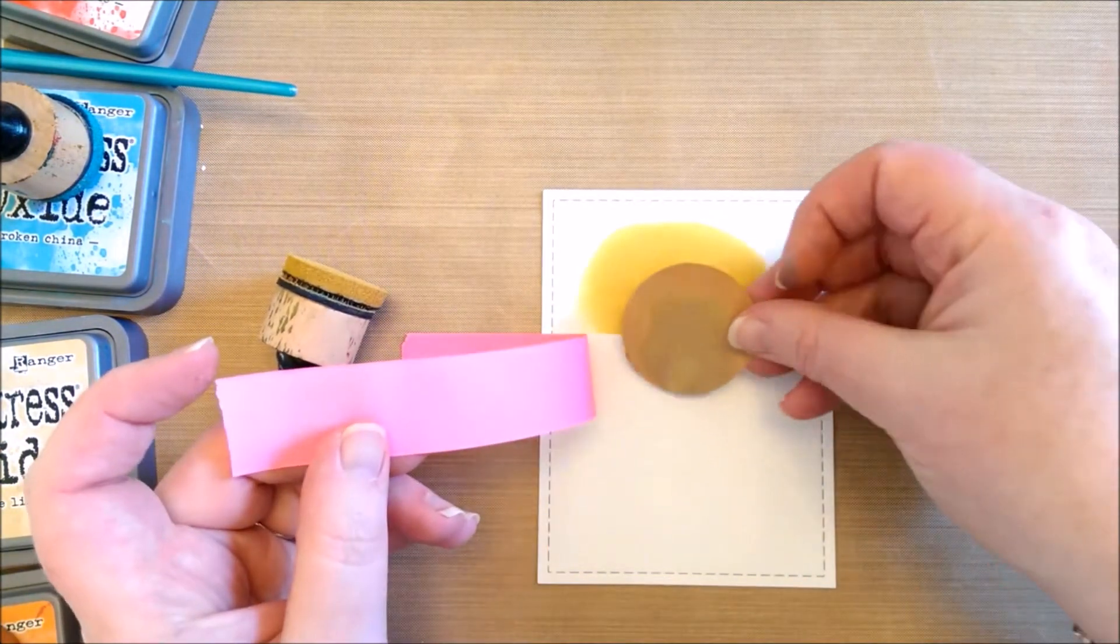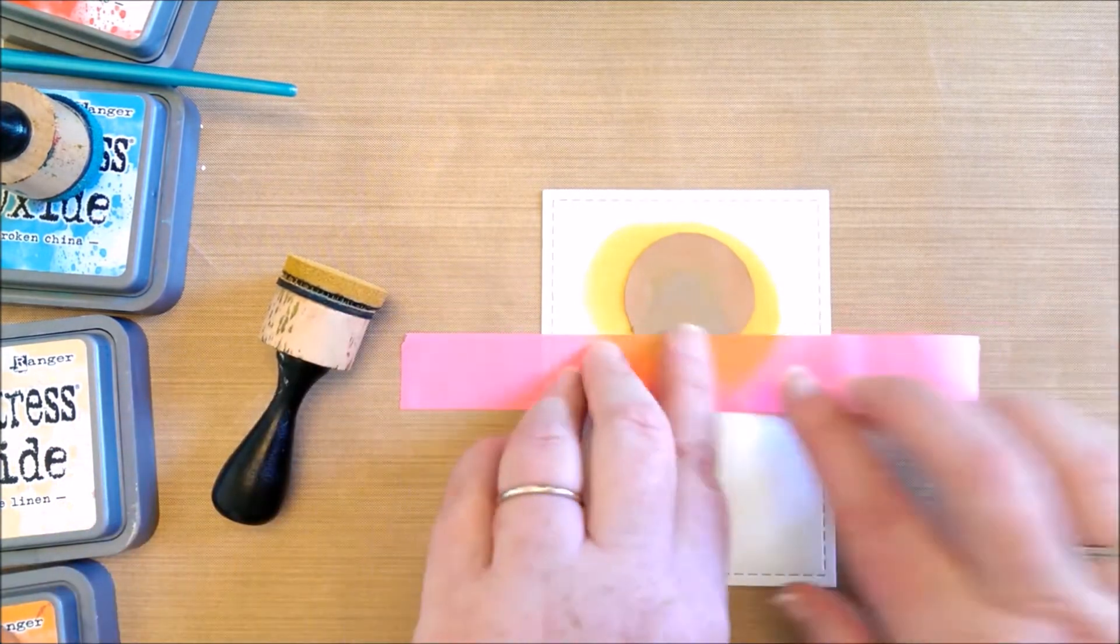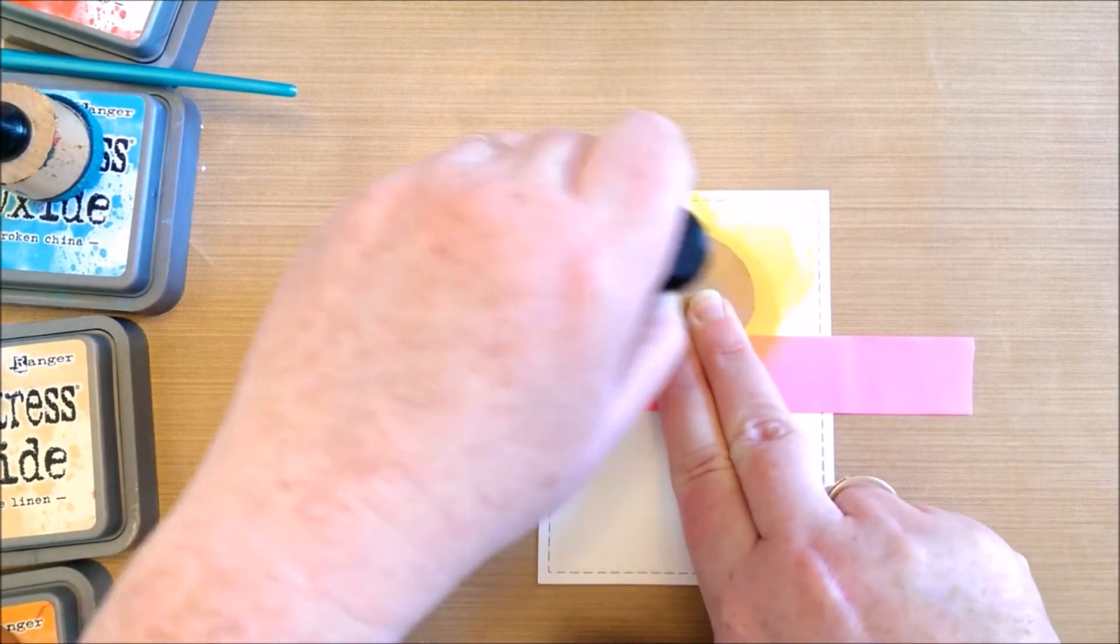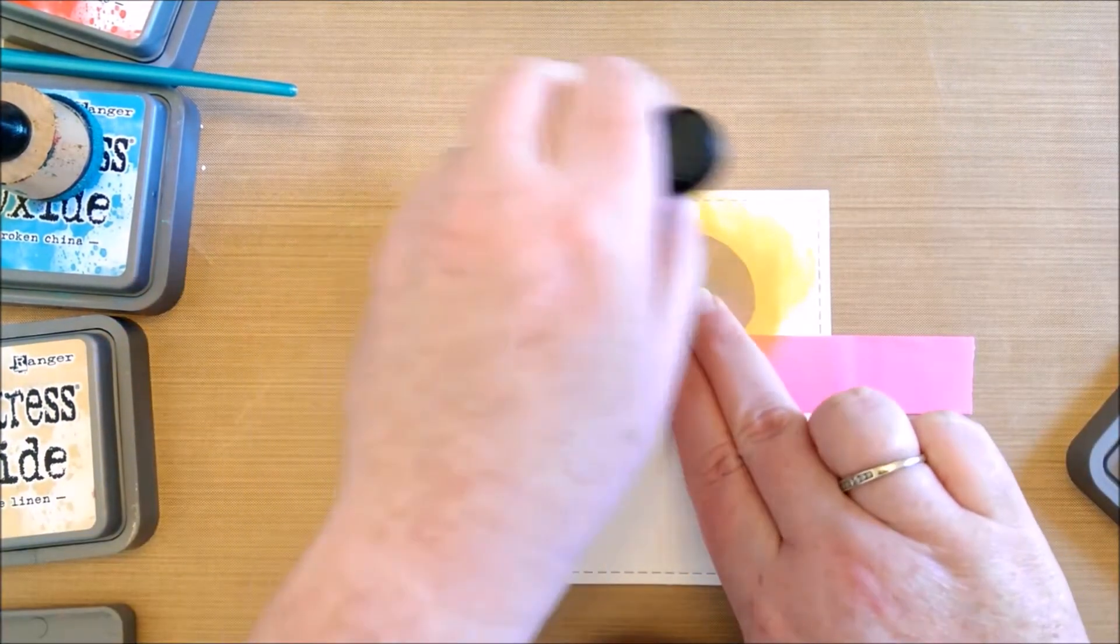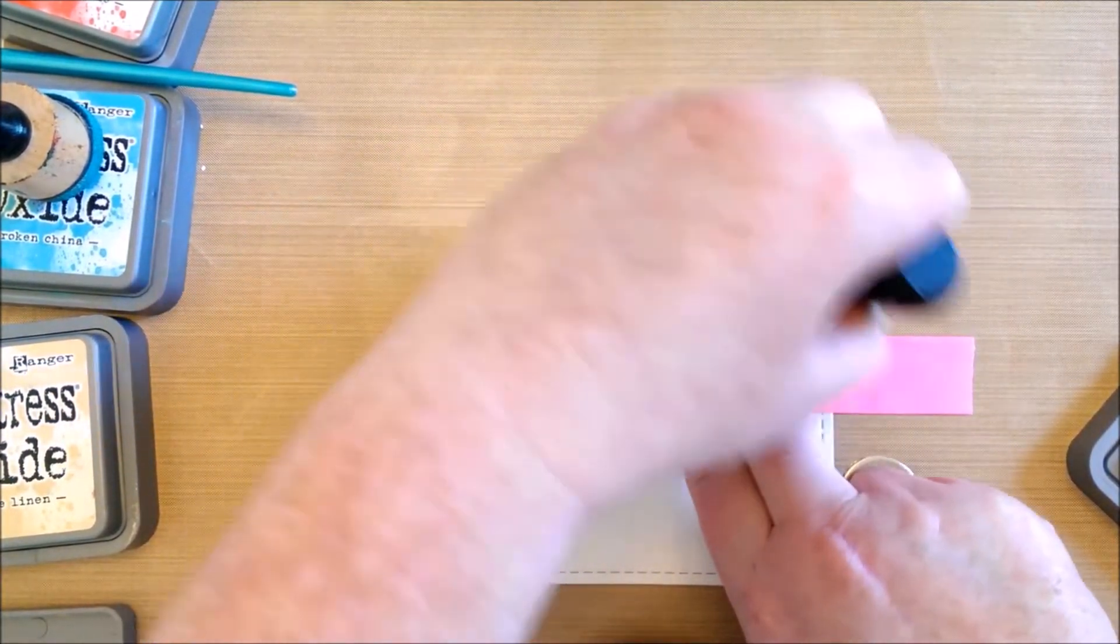I just put down some post-it tape to give me a straight line for a horizon, and then I put a mask of paper down in the shape of a circle so that I can create a sun.